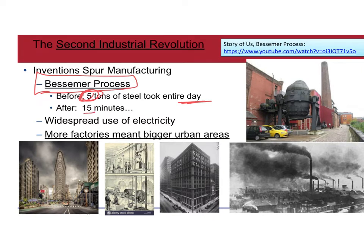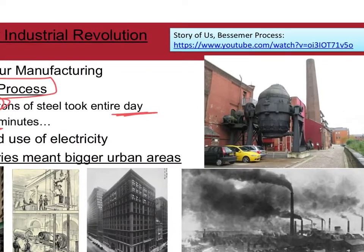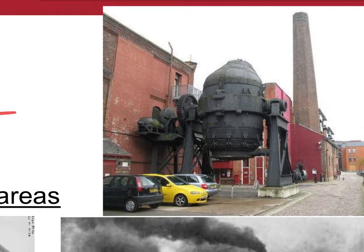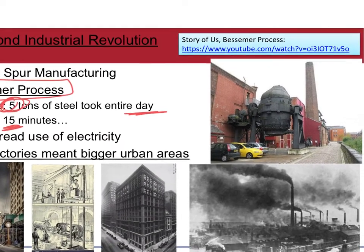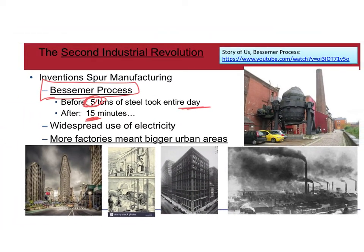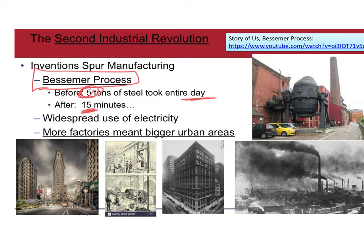What Carnegie saw was revolutionary. These huge canisters would be filled with melted iron, heated up, have oxygen pushed through to burn impurities, then tipped using cranks and pulleys so the hot iron poured into molds to make steel beams for buildings or railroads. What used to take all day to produce five tons could now be done in 15 minutes.